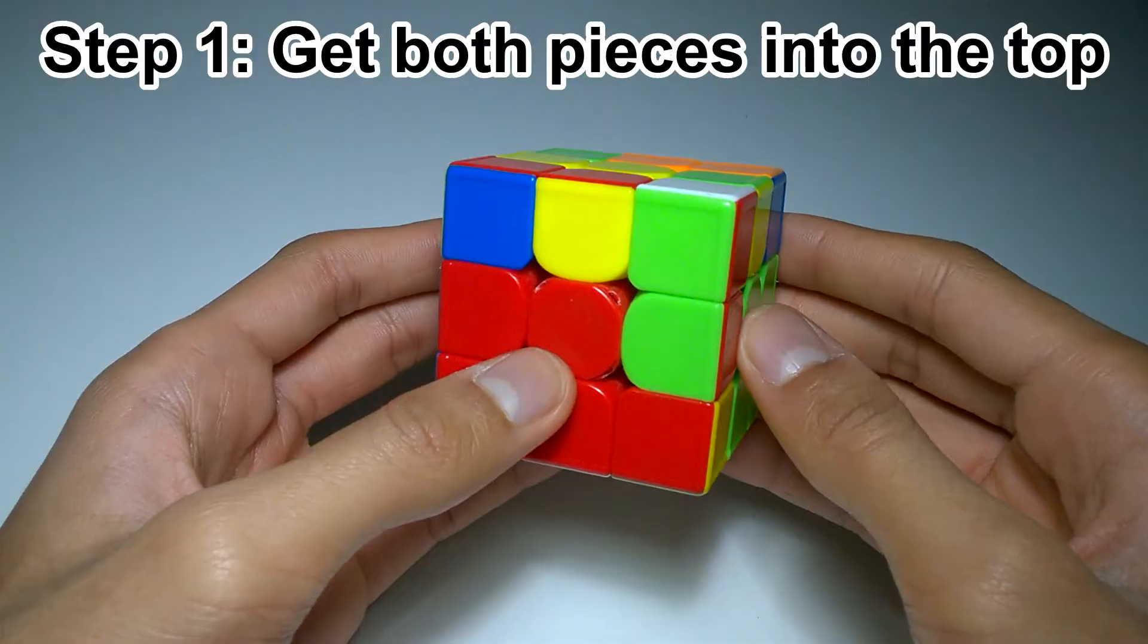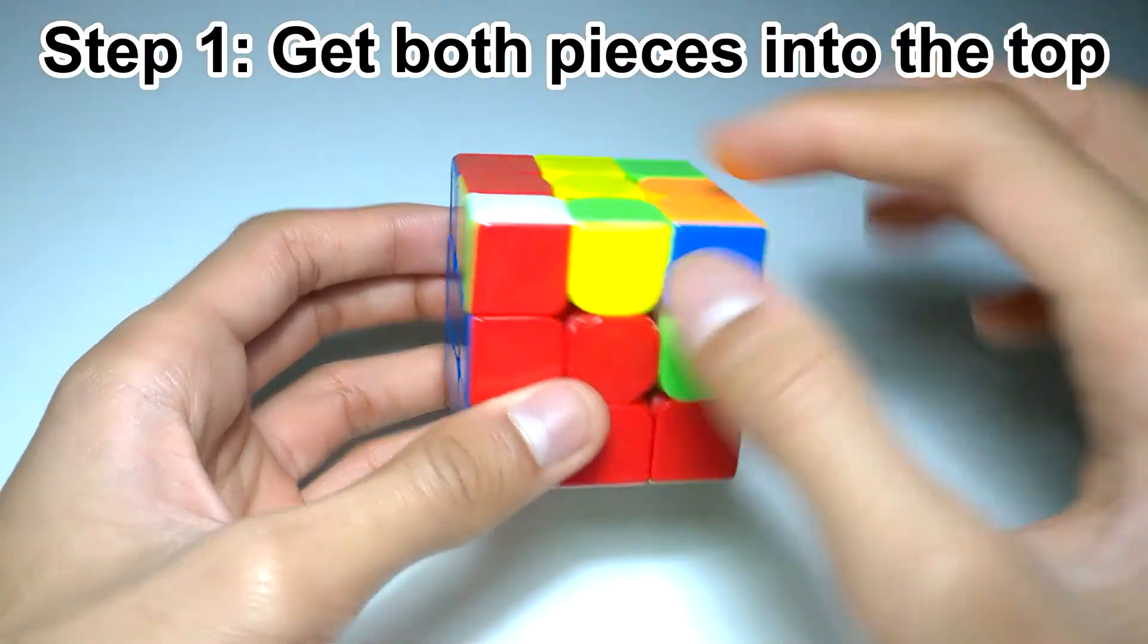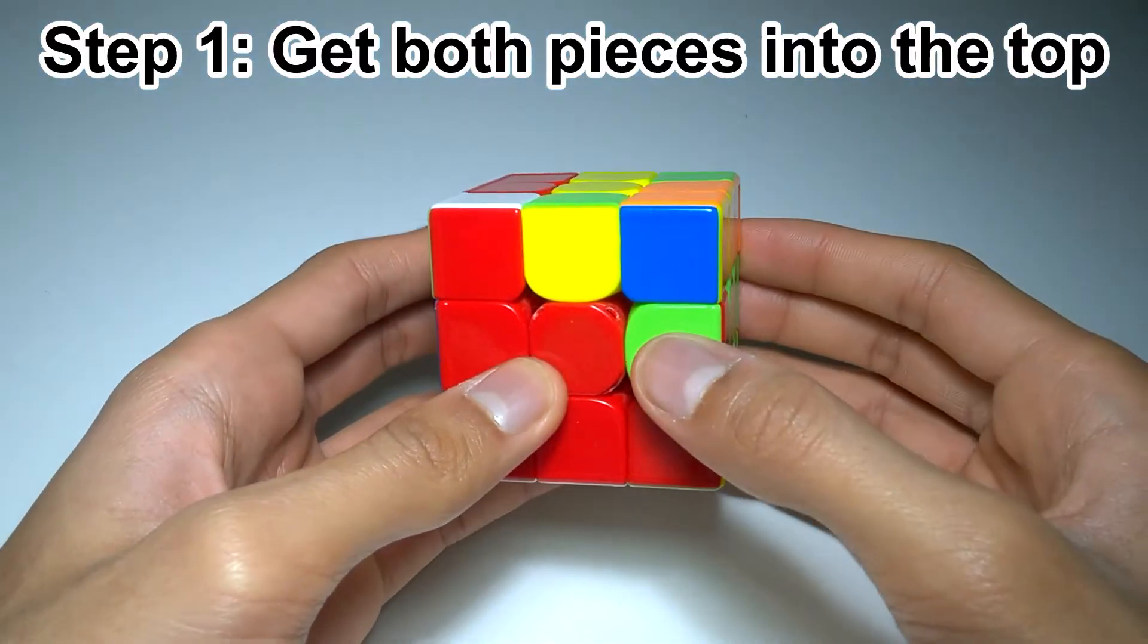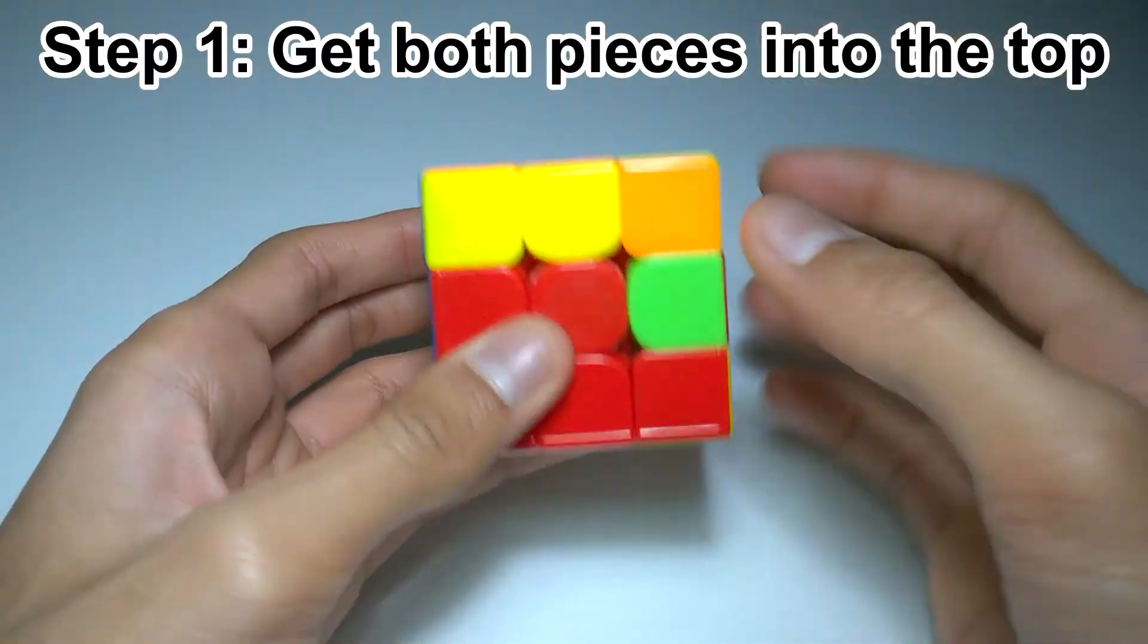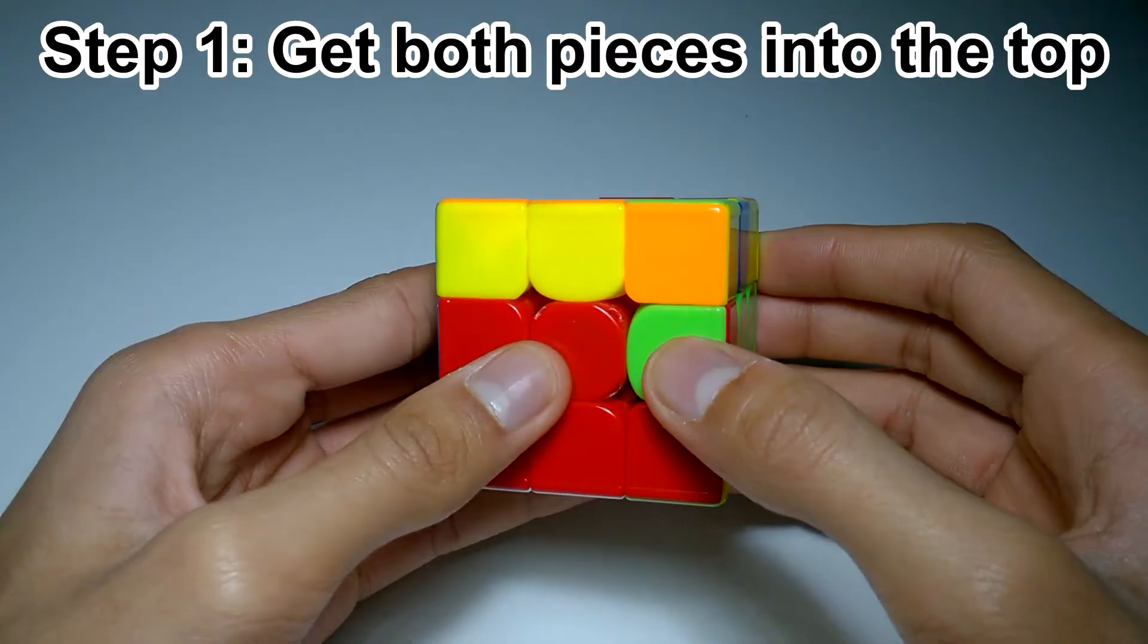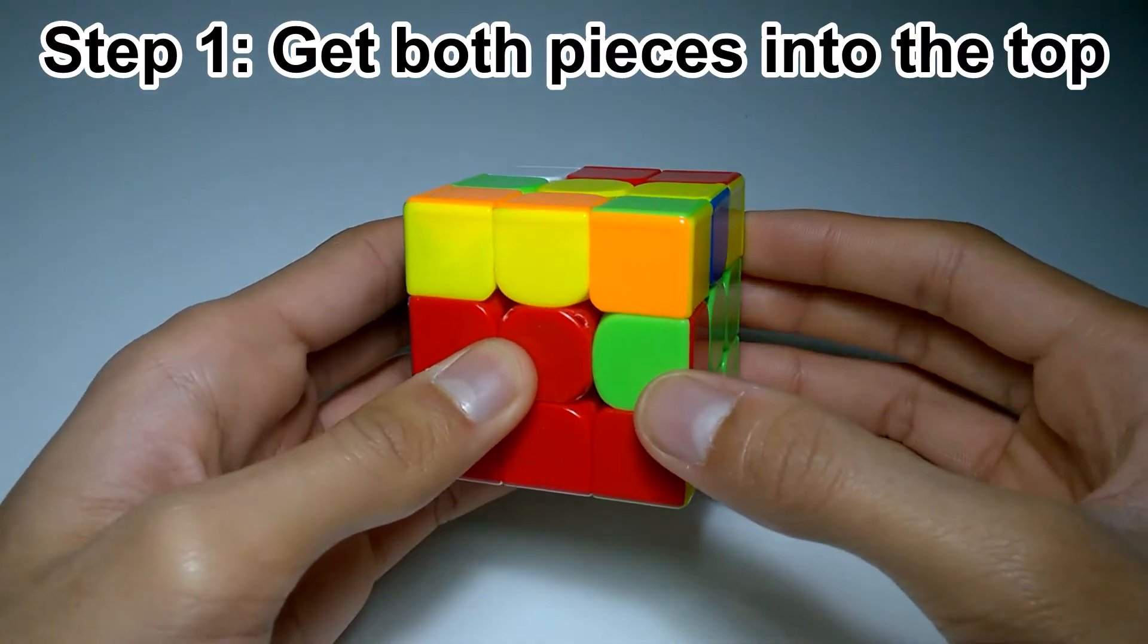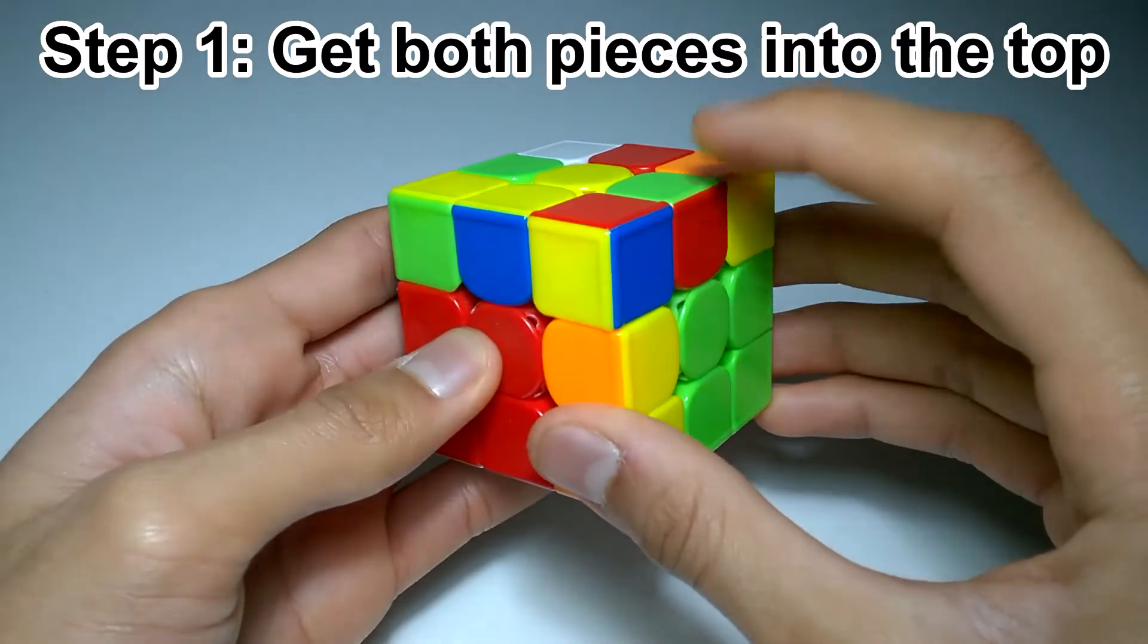Step one is to get both pieces into the top layer. In this example, the corner is already in the top layer, but the edge is not. So we can put it into the top layer by inserting these two pieces, as they're not important at this point. We insert these pieces with one of the two algorithms. In this case, they're going into the right, so we'll do R U' R', and that's pushed this edge out of the slot.